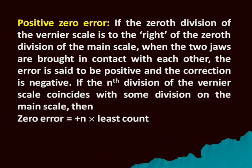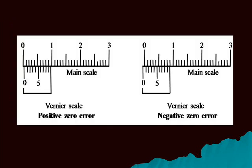Positive zero error: If the zeroth division of the vernier scale is to the right of the zeroth division of the main scale when the two jaws are brought in contact with each other, the error is said to be positive and the correction is negative. If the nth division of the vernier scale coincides with some division on the main scale, then zero error equals plus n × least count.